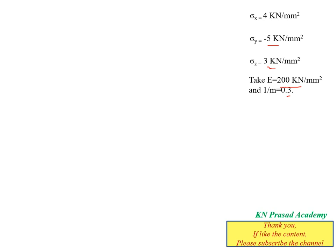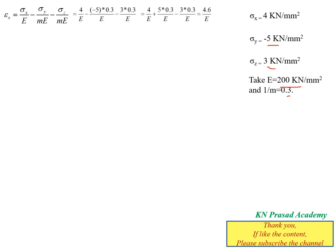Next we determine the strain in the x, y, and z directions. The strain in the x direction, εx, is given by σx/E − (1/m)·σy/E − (1/m)·σz/E. Substituting: σx = 4, σy = −5, σz = 3, and 1/m = 0.3, we get 4/E − (−5 × 0.3)/E − (3 × 0.3)/E, which gives εx = 4.6/E.